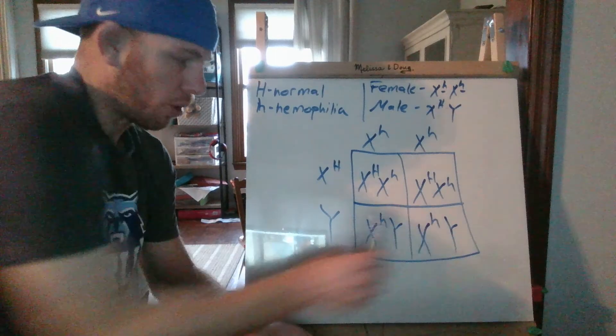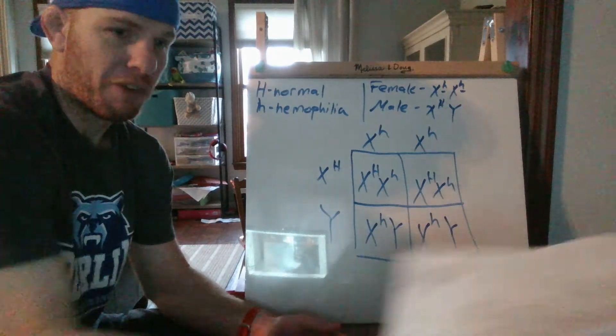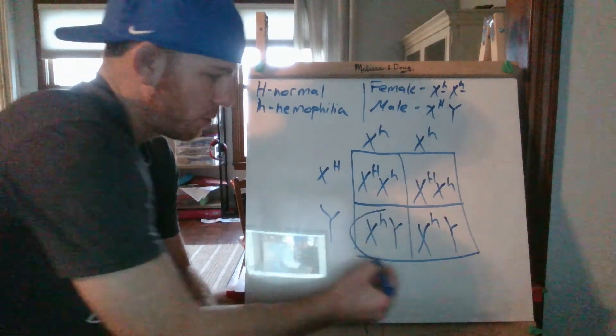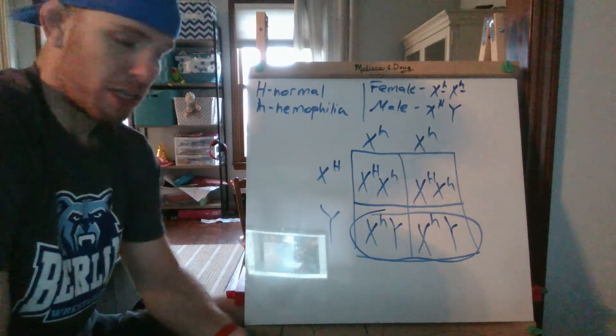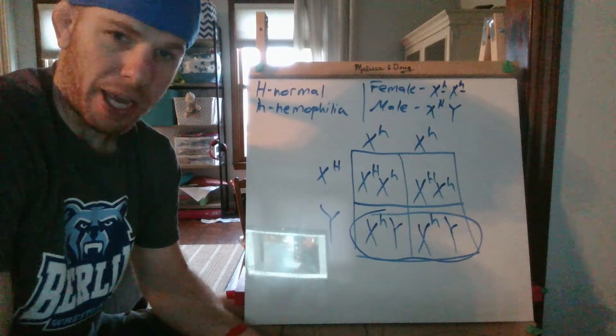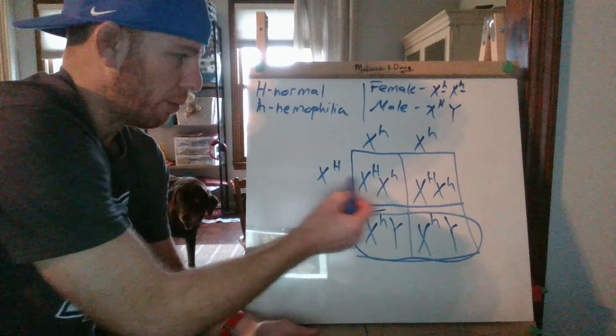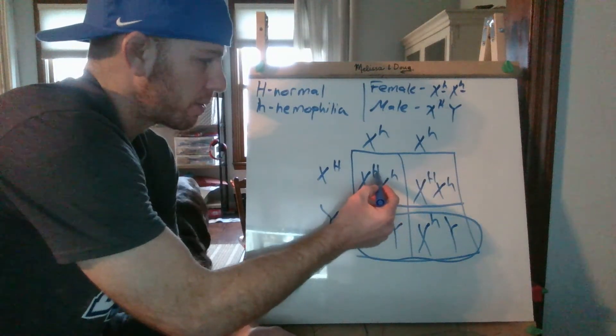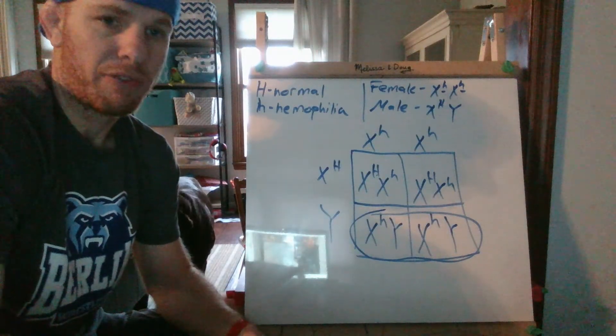Here we have a hemophiliac female with a normal male. When I do this genetic cross, what are the percent chances that we produce hemophiliac individuals? If you look here, both of these males are hemophiliac. So we can assume that every time they have a male child, it will be hemophiliac. From this cross, we're going to have heterozygous females produced.